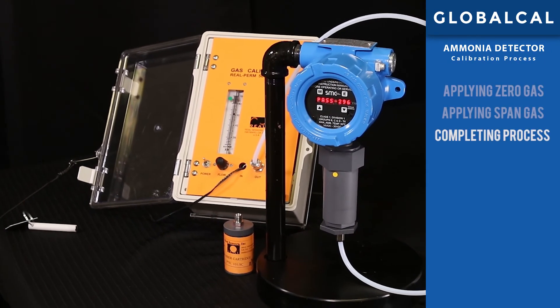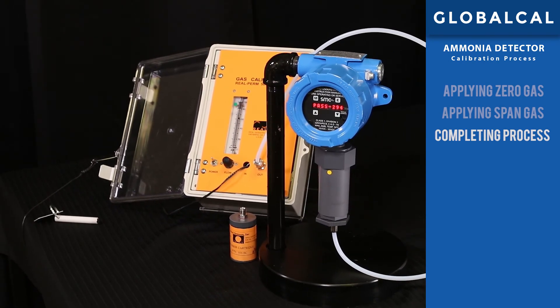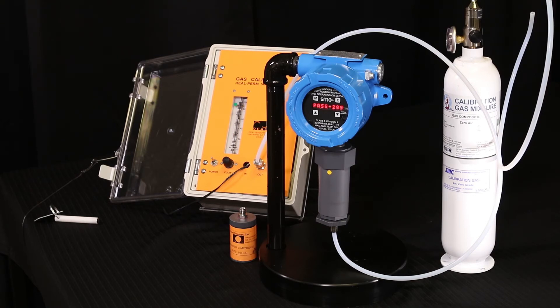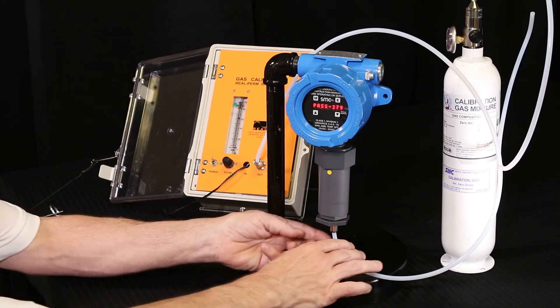Step three: completing the process. Observe the display and you'll notice that the detector will begin a countdown of five minutes and will also display pass. This ensures that the detector will return to normal operation when no span gas is present. As the timer continues to count down, turn off the span gas pump and disconnect the tubing and fitting from the sensor.